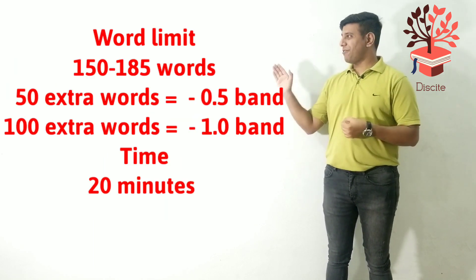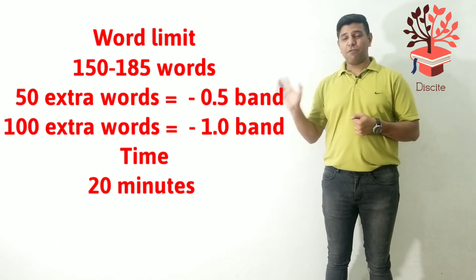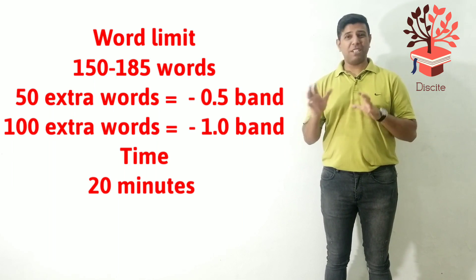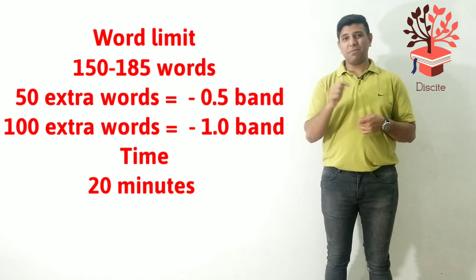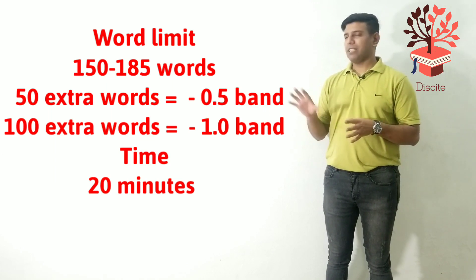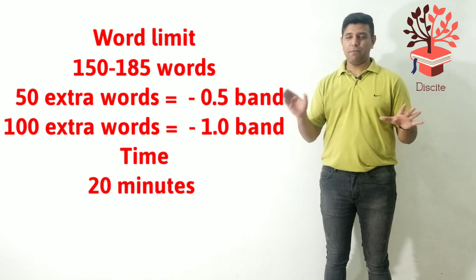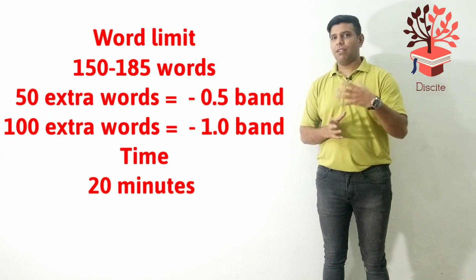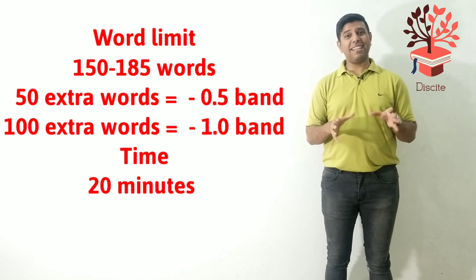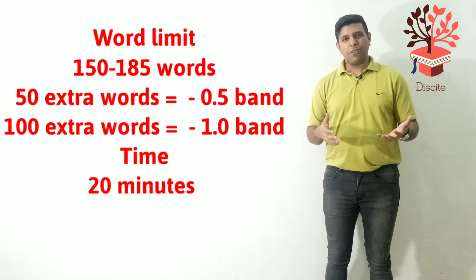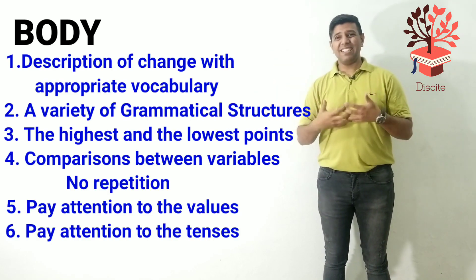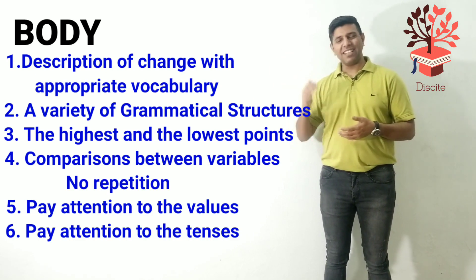Remember, we just have 150 to 180 words to write and 20 minutes for that. We have to write a maximum of 185 words — we cannot write 200 because we'll lose 0.5 bands. 50 words extra means 0.5 bands gone, 100 words extra means one band gone. So minimum 150, maximum 185. If you have all the information explained in 140 or 145 words, it's okay — most examiners are lenient, but you must have everything covered. In the body, you talk about the relationships, comparisons, and the highest and lowest.